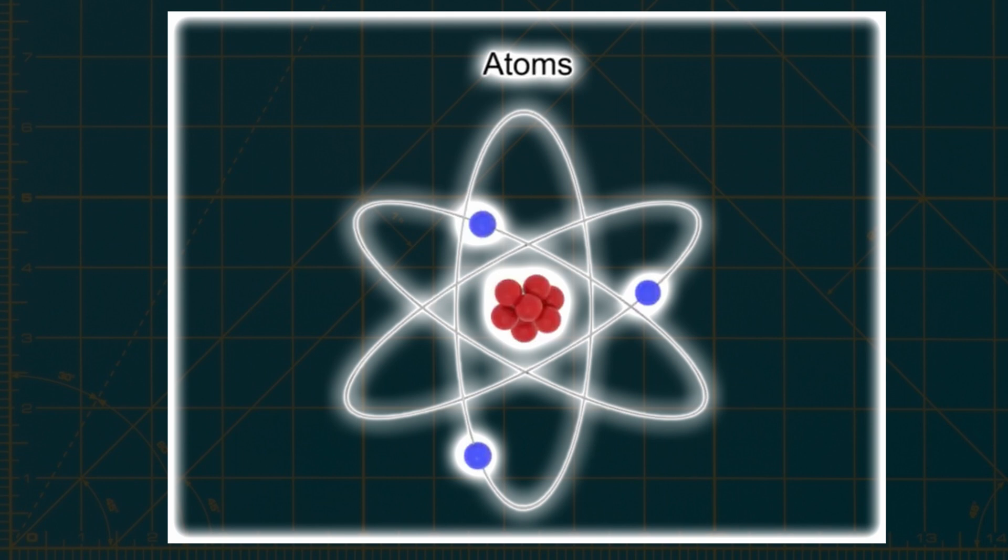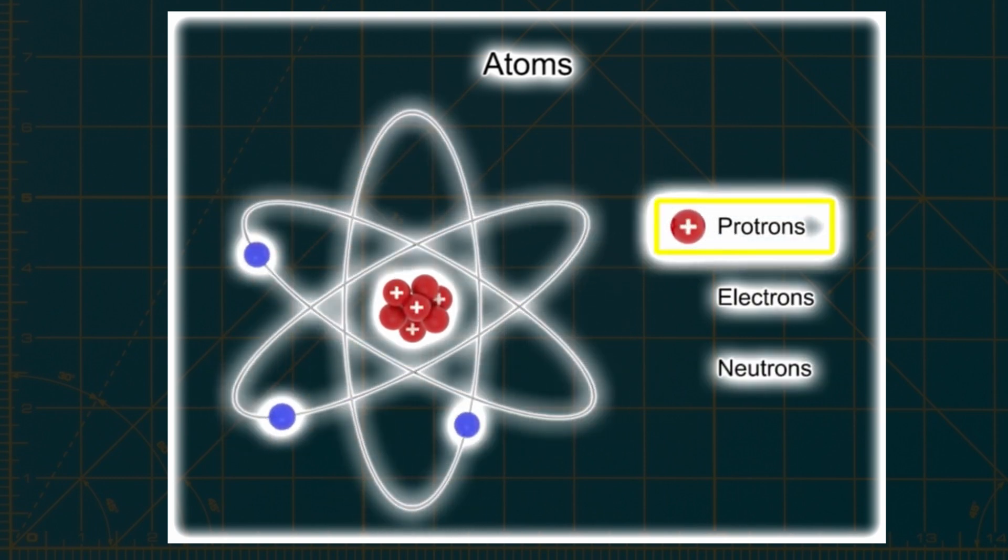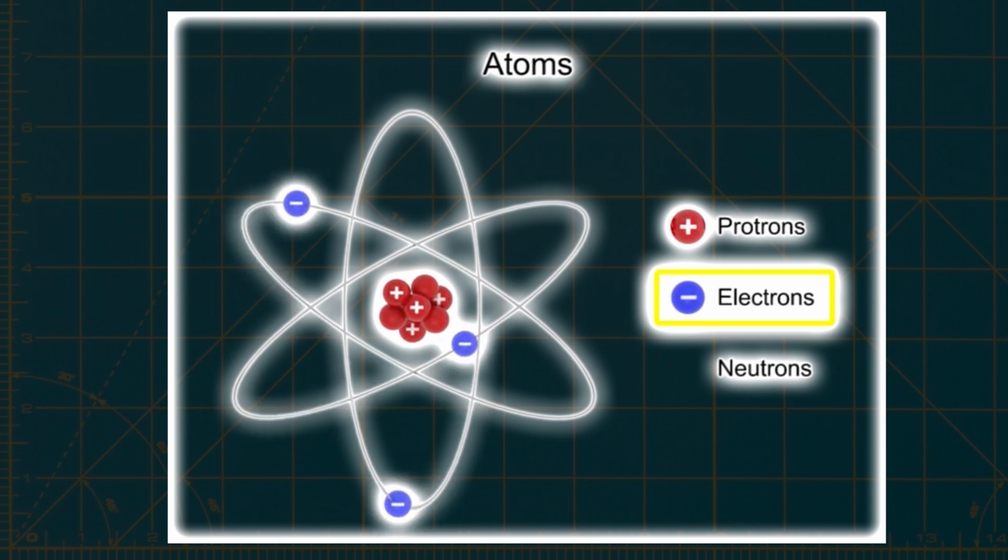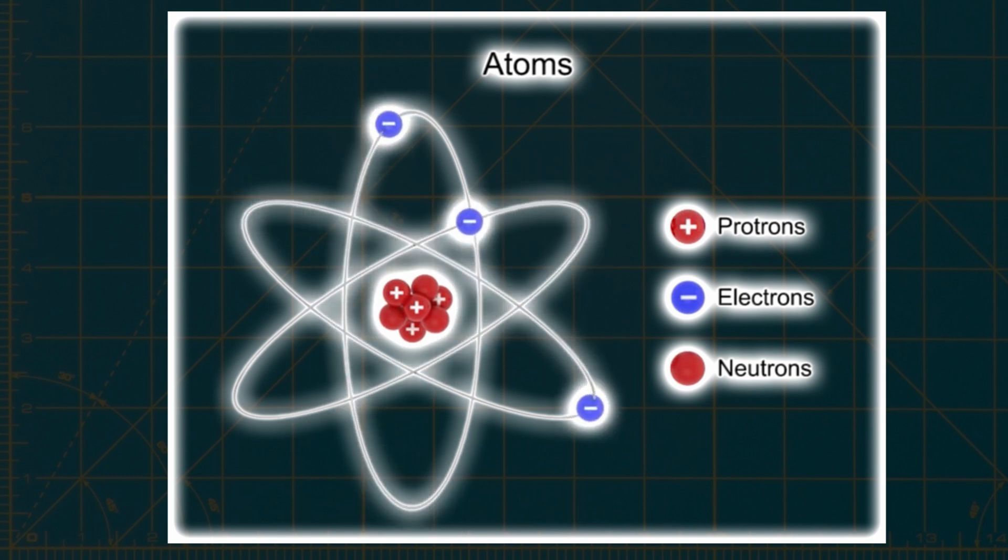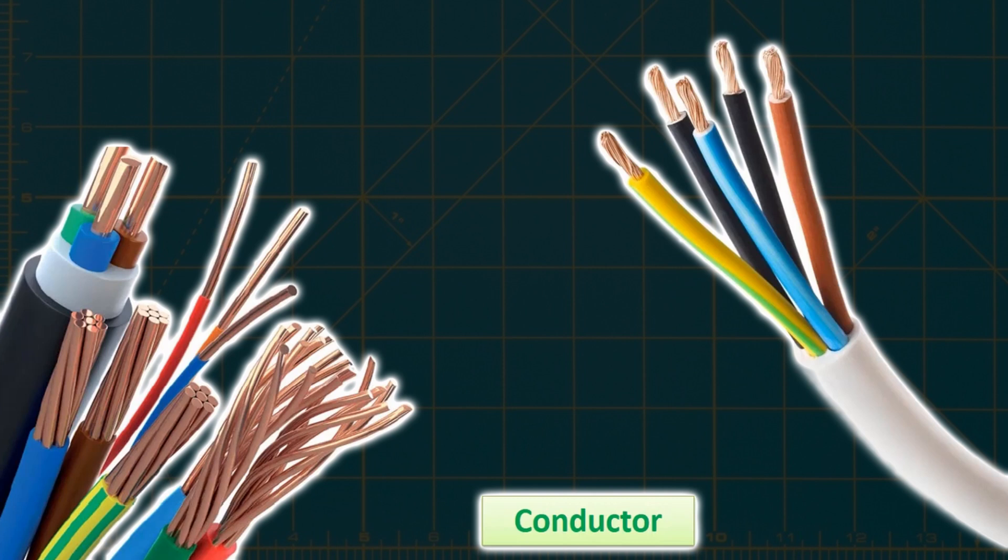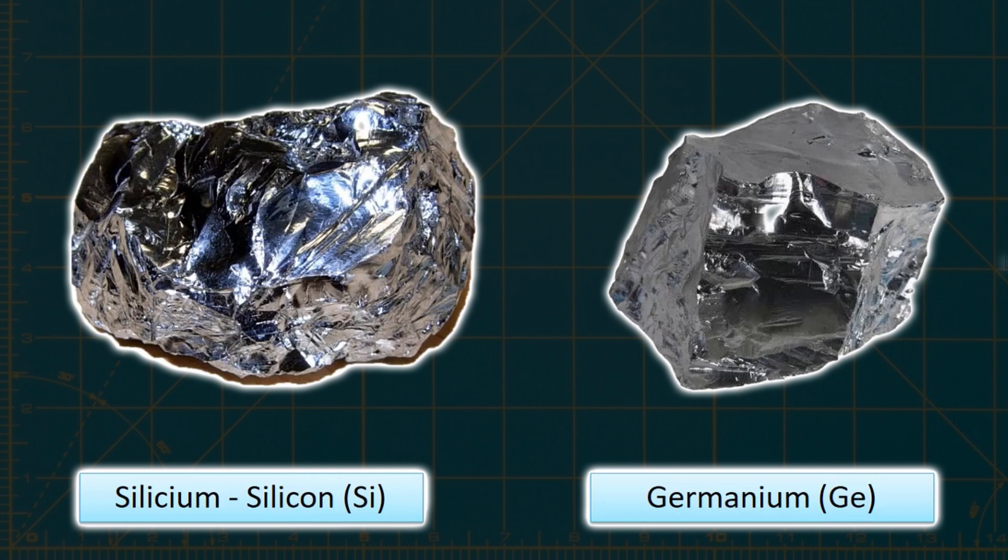Atoms with 1, 2, or 3 electrons in their outer orbital are conductive, while those with 4 electrons are semiconductors. Under normal circumstances, semiconductors behave as insulators, but they can be made conductive by adding certain additives. Diodes are created by doping these semiconductors with impurities. The most commonly used semiconductors for diodes are silicon and germanium, which have similar crystal structures. Silicon is abundant in nature, while germanium is relatively rare. Due to its abundance, silicon is widely used in semiconductor circuit elements.